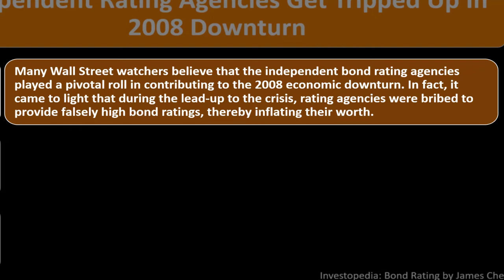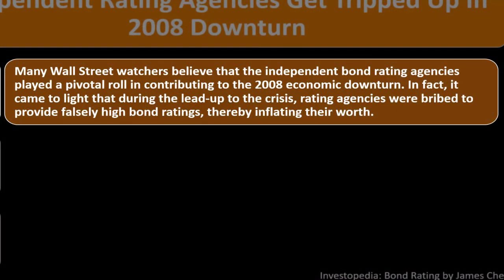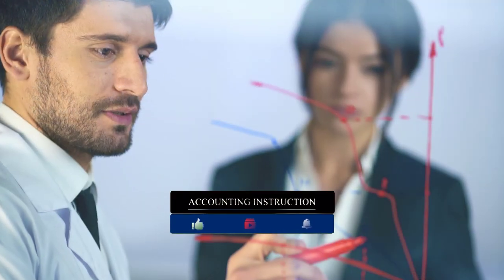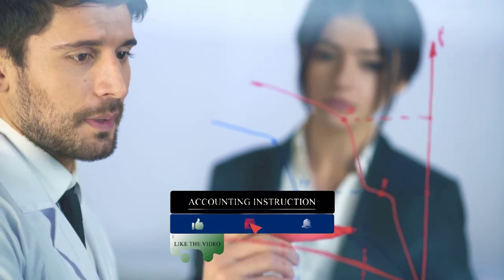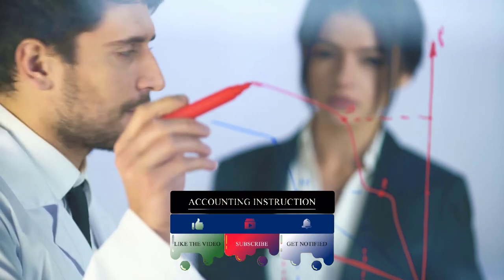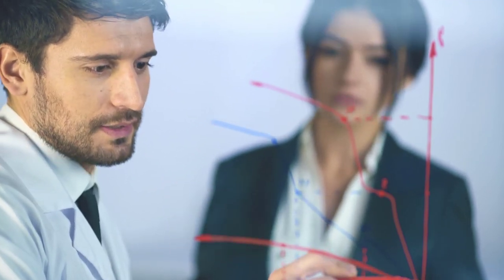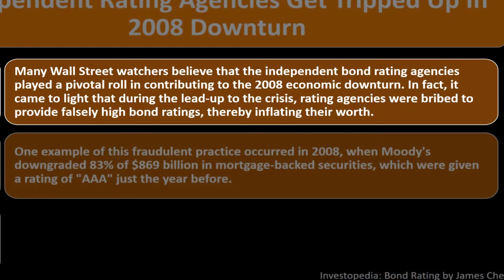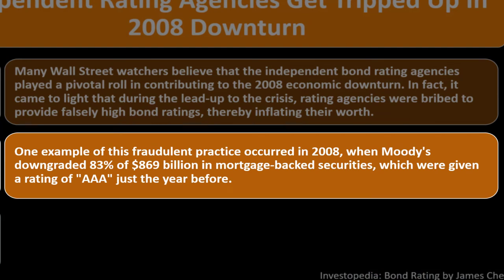Many Wall Street watchers believed the independent bond rating agencies played a pivotal role in contributing to the 2008 economic downturn. It came to light that during the lead-up to the crisis, rating agencies were bribed to provide falsely high bond ratings, thereby influencing their worth. That gave a whole lot of distrust to the rating agencies that everybody depends on for transparency. It was similar to past crises where auditors of publicly traded companies colluded with companies to provide favorable audit reports. This kind of thing rocks faith in the financial system.